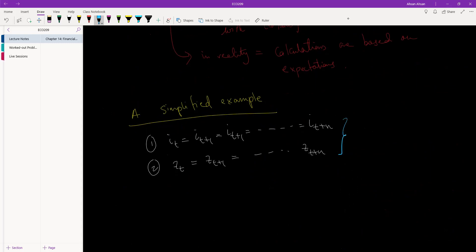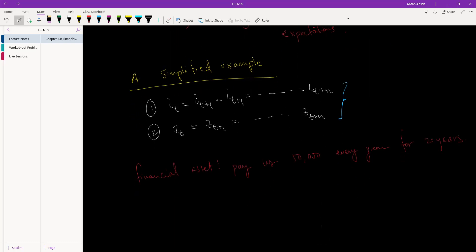With these two simplifying assumptions, let me set the stage. Suppose we have a financial asset, whatever it may be, that will pay us 50,000 taka every year for 20 years. So we can buy a financial asset that promises to pay us 50,000 taka for every year from, let's say, 2021 to 2041, so 20 years.